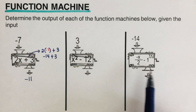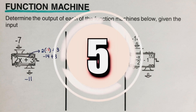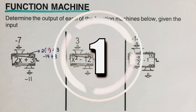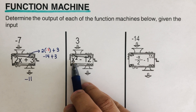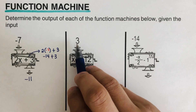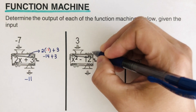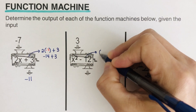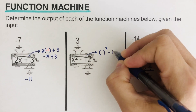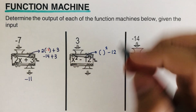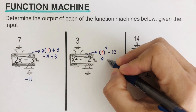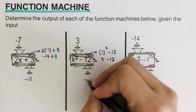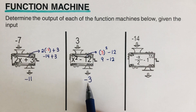Pause the video and try the next two problems on your own, then check your answer. For this problem, the trick is to change the variable into a parenthesis before putting in the input. Inside the machine we have parenthesis-squared minus 12. The input is 3, so we get 3 squared minus 12 — that's 9 minus 12 — which is negative 3. The output is negative 3, and this is a function because we have a unique single output.